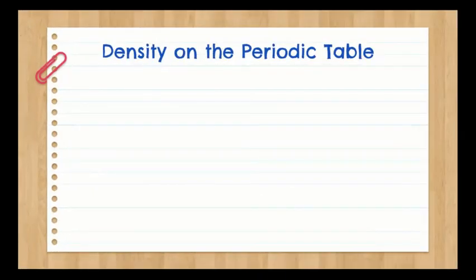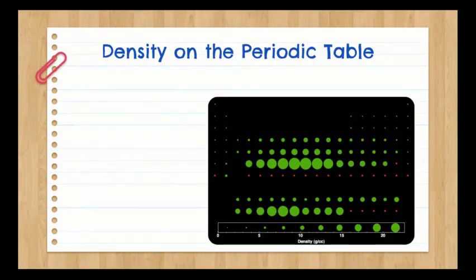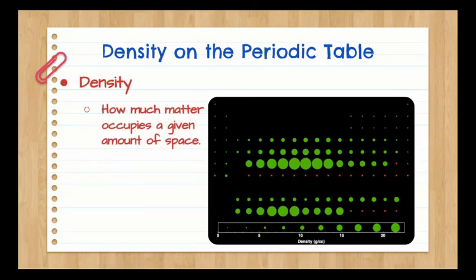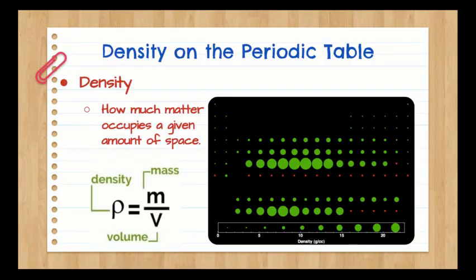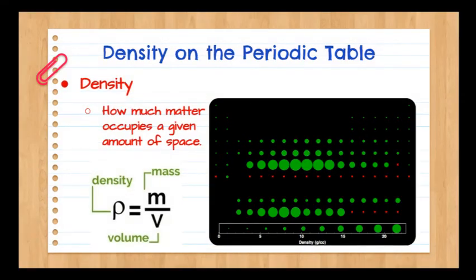Lastly, density is another trend on the periodic table that increases as you move down each group. Density measures how much matter is in a given amount of space, or mass divided by volume. So the more electrons, neutrons, and protons you have, depending on the number of shells it has and how much space it takes up, changes the density.